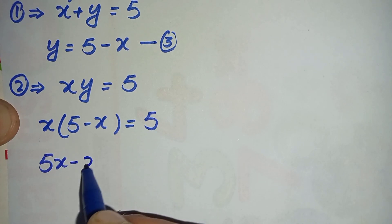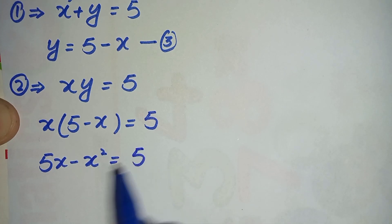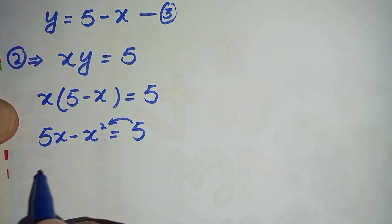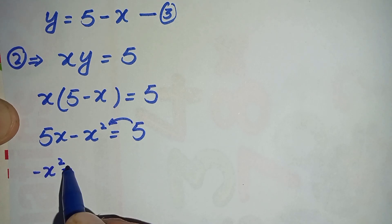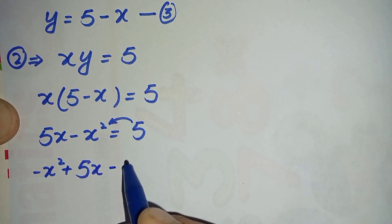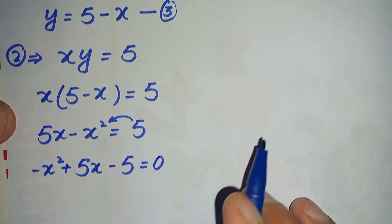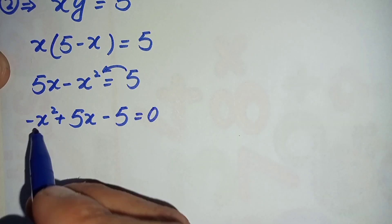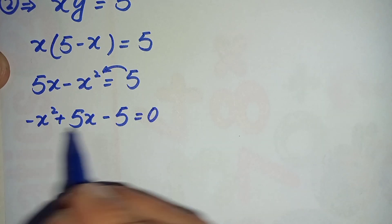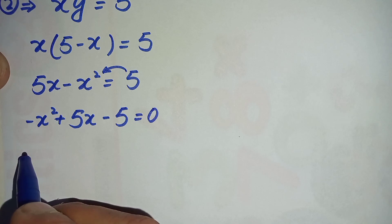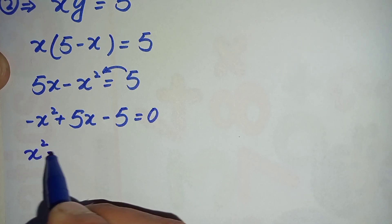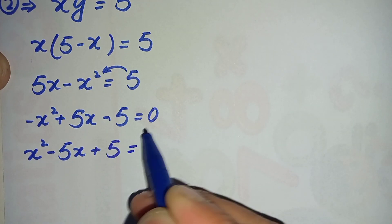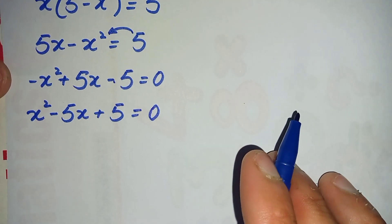Let's multiply x inside the parenthesis, so it will become 5x minus x squared is equal to 5. Rearranging these terms and shifting 5 to the left-hand side gives minus x squared plus 5x minus 5 is equal to 0. Since the coefficient of x squared is negative, we multiply both sides by minus 1, giving x squared minus 5x plus 5 is equal to 0.